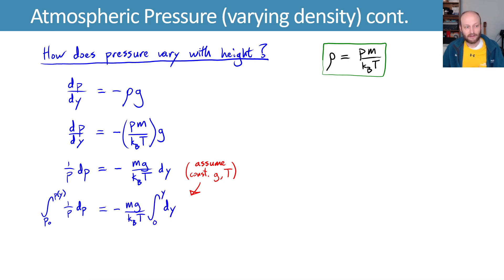We can now integrate. And in evaluating this integral, we'll integrate and assume that we have a constant gravity and constant temperature. Now, this is probably the worst assumption in this whole garden path we're wandering down.